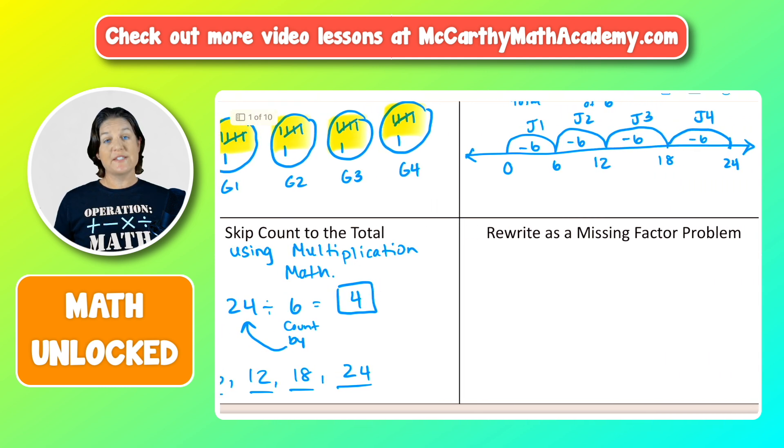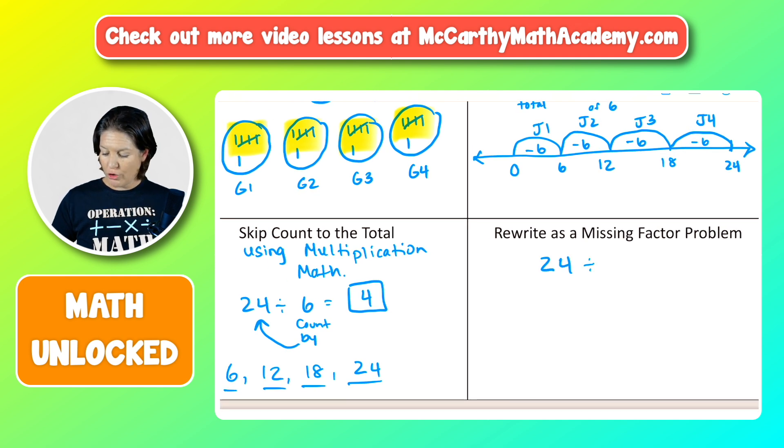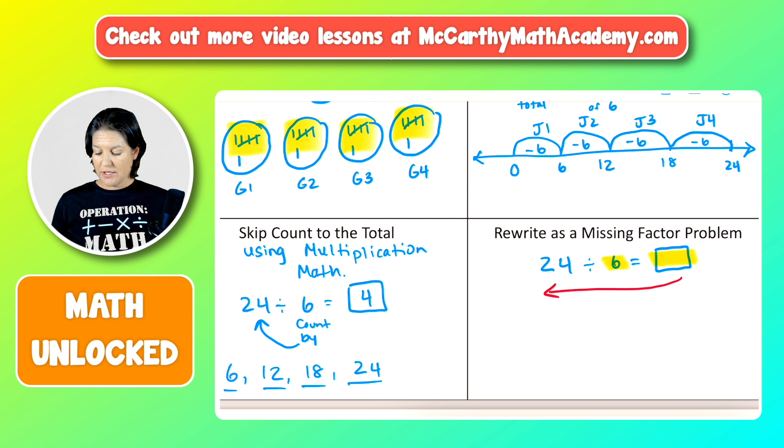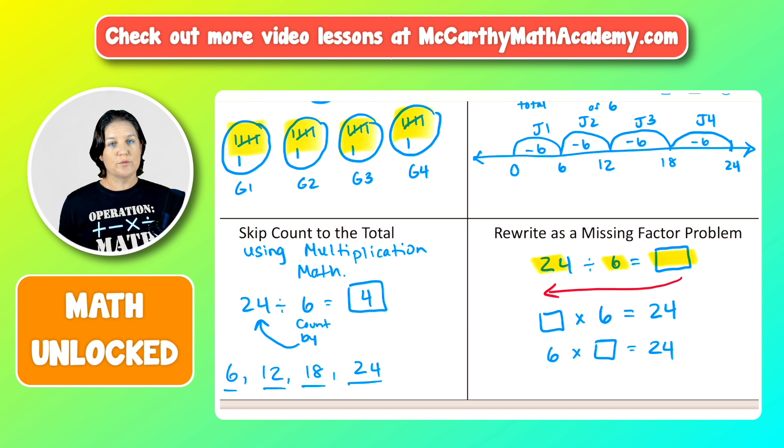So now a next strategy, rewrite as a missing factor problem. So we just did this sort of, but let's make it official here. We know that 24 divided by six equals a number. We know it's going to be four, but the way that we can get there is to reverse it. So to kind of go backwards here, let me show you. So if we're taking it backwards, we would be writing the missing factor inverse operation is multiplication. So times six equals 24. If I'm rewriting that it would be the missing factor times six equals 24. And sometimes when students see it as multiplication, they make better sense of it there. You could also say that six times something equals 24. Again, if we use the multiplication mashup, six, 12 and 18, 24, four times. So four times six equals 24. Groovy.